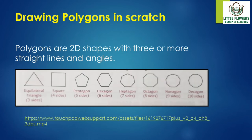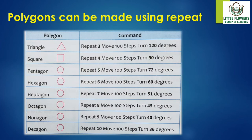Next, drawing polygons in Scratch. Polygons are 2D shapes with three or more straight lines and angles. Some examples are: equilateral triangle, square, pentagon, hexagon, heptagon, octagon, nonagon, and decagon. To draw polygons in Scratch, you must remember a few thumb rules.